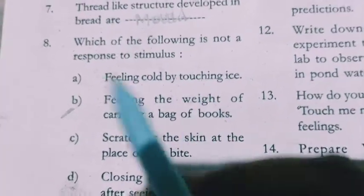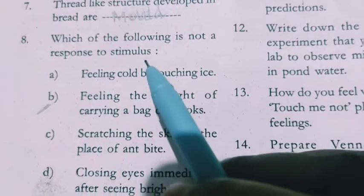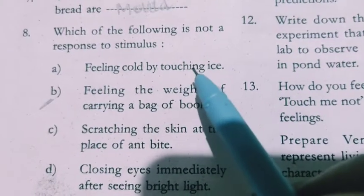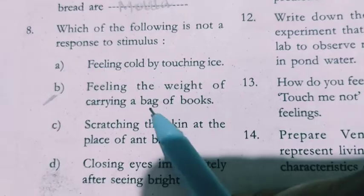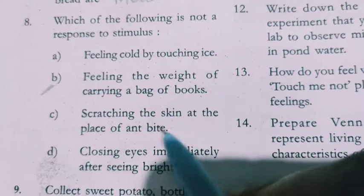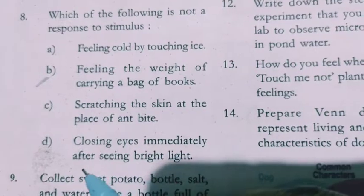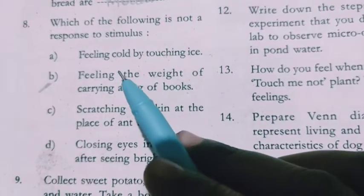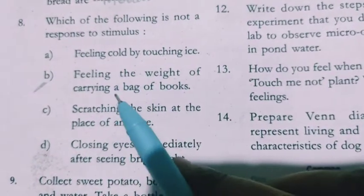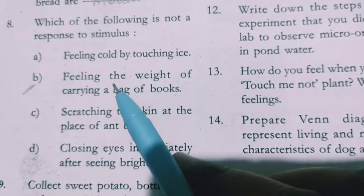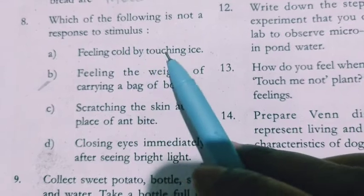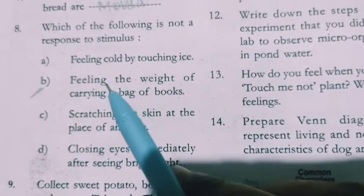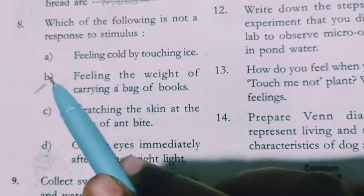Eighth question: which of the following is not a response to stimulus? The options are: feeling cold by touching ice — response to stimulus; feeling the weight of carrying a bag of books; scratching the skin at the place of an ant bite — response to touch; and closing eyes immediately after seeing bright light — response to light. Feeling the weight of carrying a bag of books is not a response to stimulus. That is the answer.